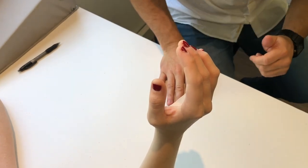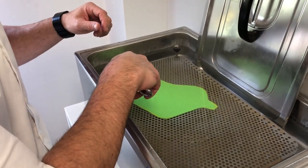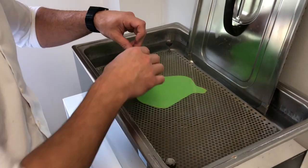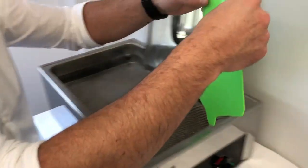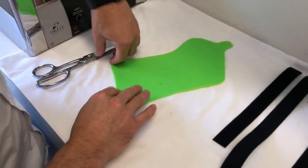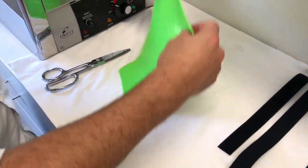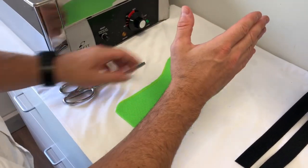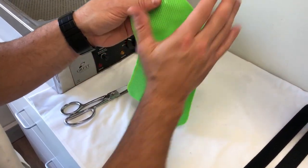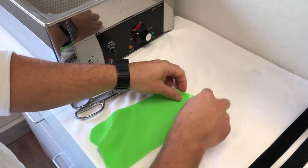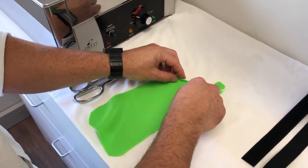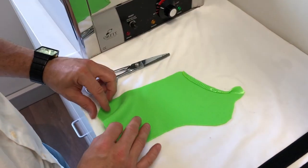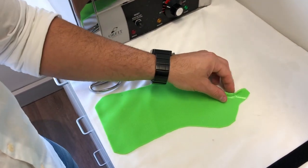Our thermoplastic should be ready now. So we're just taking our thermoplastic out of the water, drying it off. This one's going on a right hand. We're just going to fold our distal edge, our distal palmar crease, ready to put it on our patient.